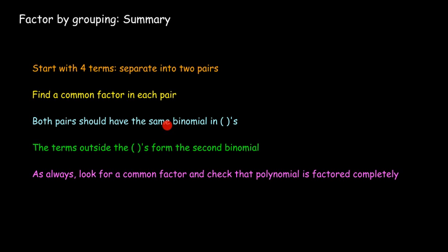Both pairs should have the same binomial in parentheses. If they don't, then you may be dealing with something that can't be factored by grouping. The terms outside the parentheses form the second binomial. And, of course, you want to look for a common factor and check that you have factored the polynomial completely.